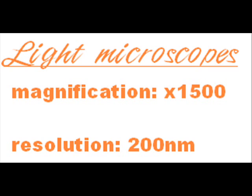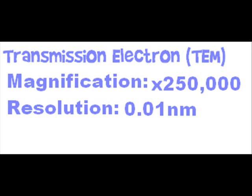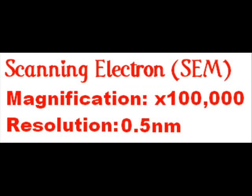Light microscopes have a maximum resolution of 0.2 micrometers and a maximum magnification of 1500. Transmission electron microscopes have a maximum resolution of 0.0001 micrometers and a maximum magnification of more than 1 million. Scanning electron microscopes have a maximum resolution of 0.005 micrometers and a maximum magnification of less than 1 million.